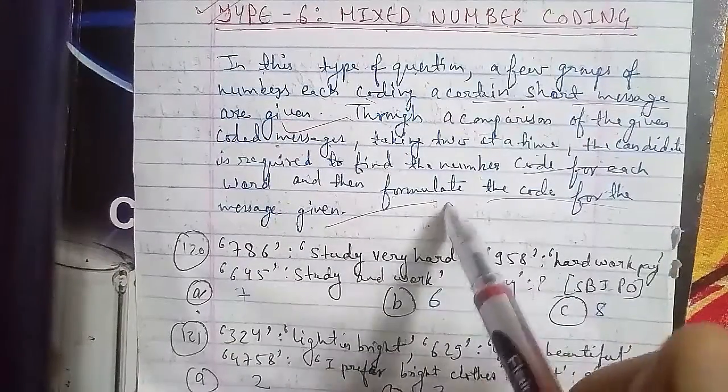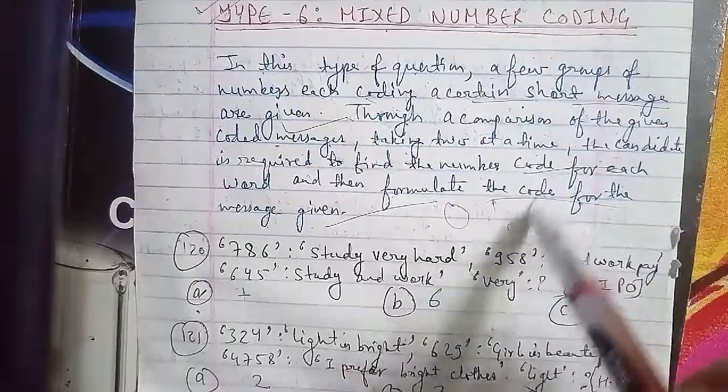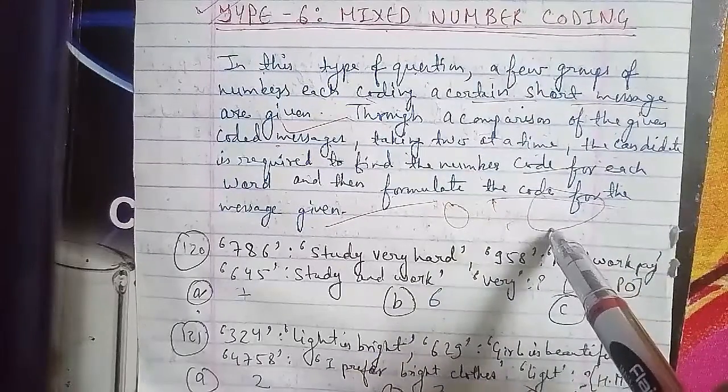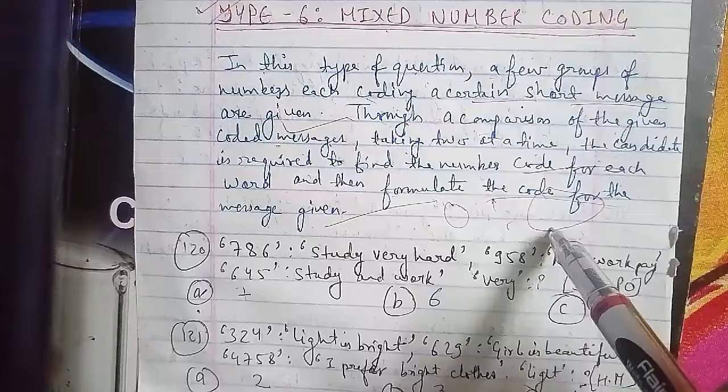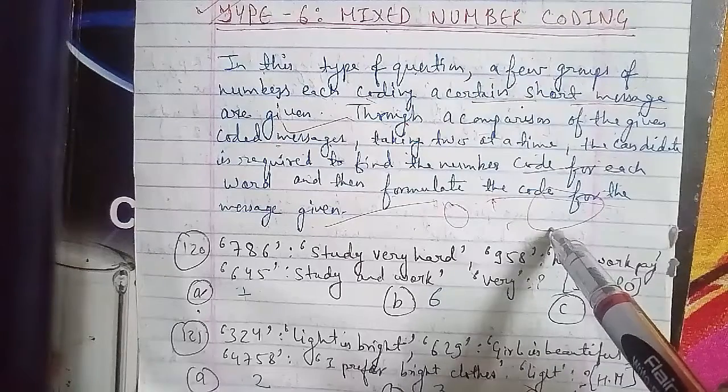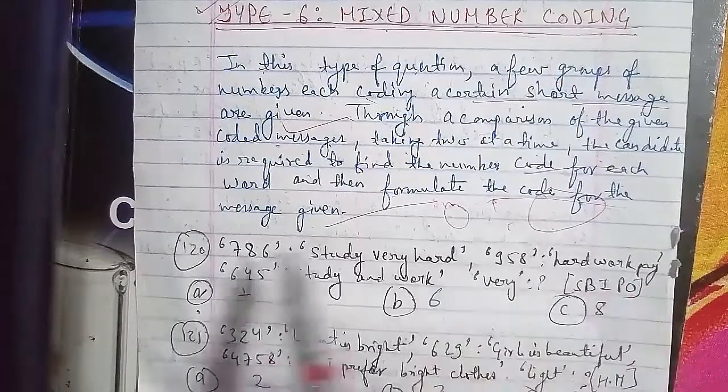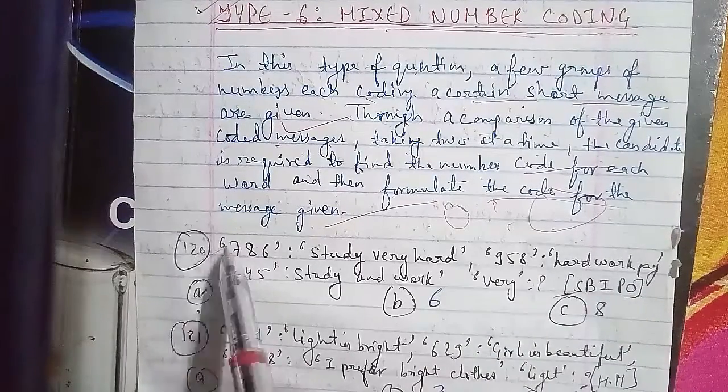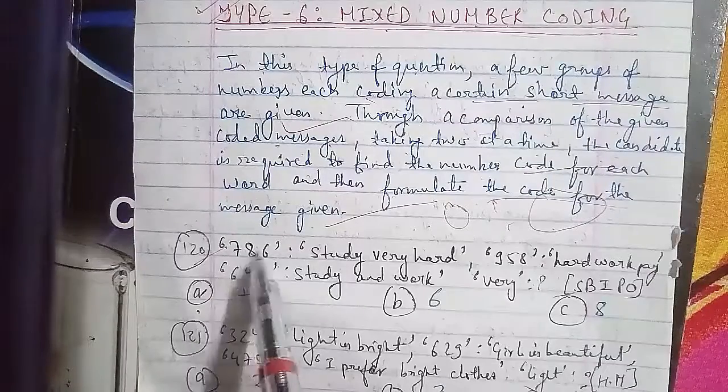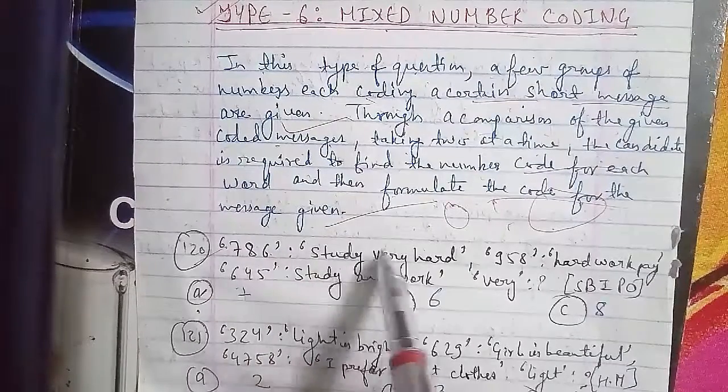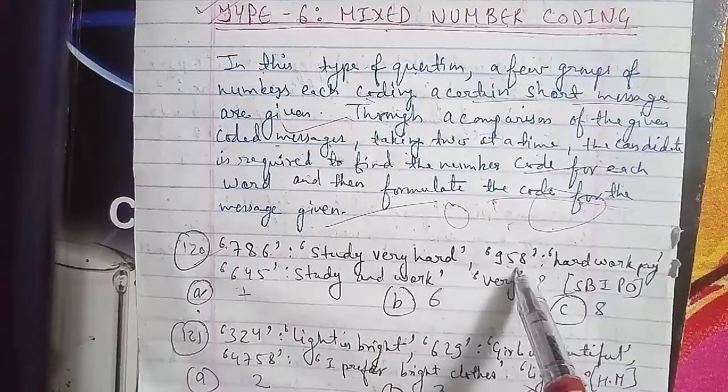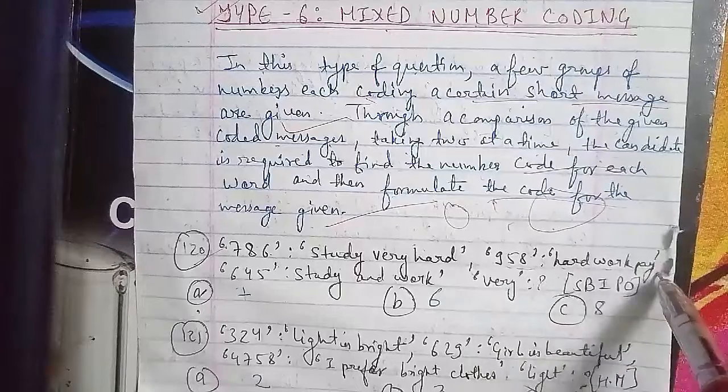786 is coded as study very hard, 958 is coded as hard work, and 645 is study and work. Find how very is coded. This is an SBI PO question. Option A is 7, B is 6, and C is 8. Let's see how very is coded. Very appears here once.